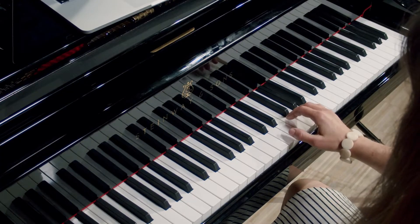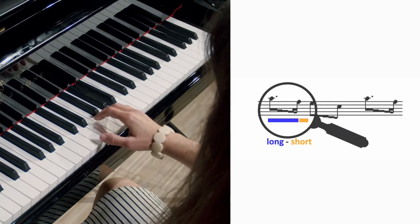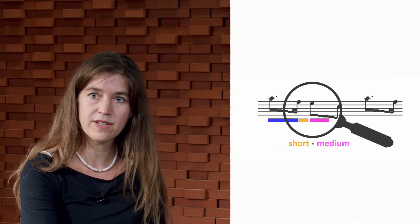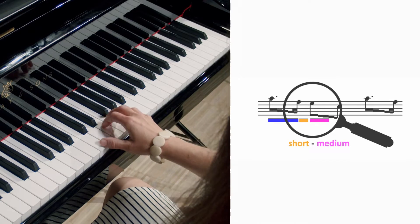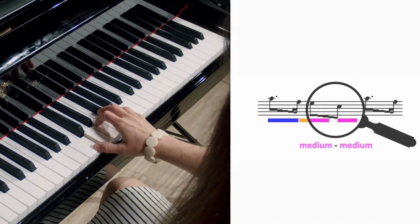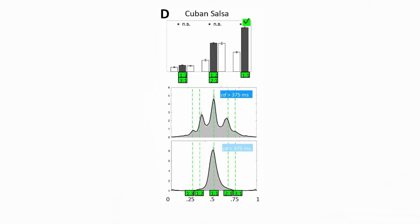For example, the first interval pair in a musical sequence comprises three notes and two intervals — one long and one short. The second interval pair comprises one short interval and a medium one. The third interval pair contains two similar intervals of medium length. This is a very simple rhythm measure, but it's already suited to reflect that musical rhythms are usually categorical: out of all possible interval pairs, only a small subset is used in a given piece of music.